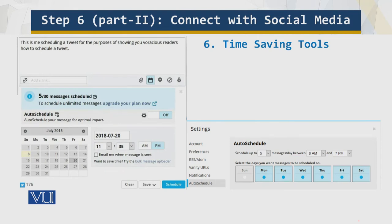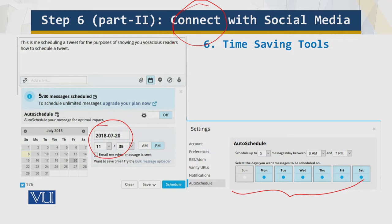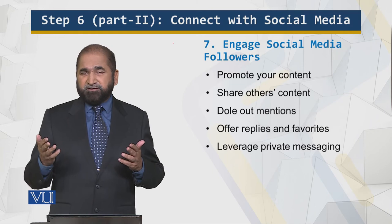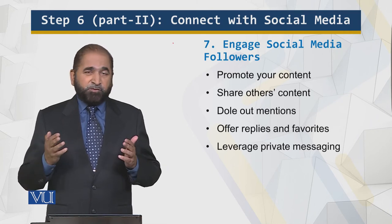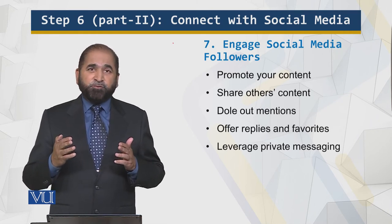This is the Hootsuite screen. You can see the date on which you want to schedule, the week view, and you can schedule your tweets, edit your tweets, and do a whole lot of things. This is how you connect with social media — connection is important. Remember, you cannot be everywhere at the same time, but using these tools you can optimize your presence.